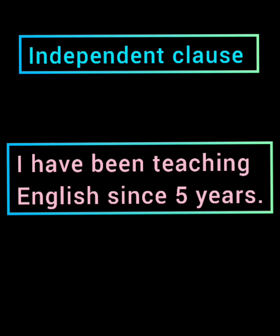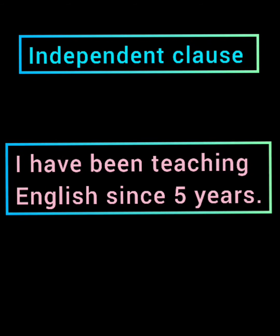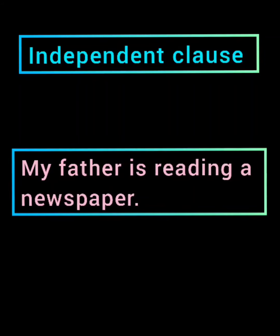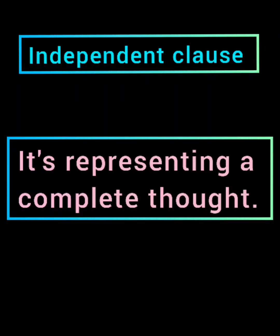Let's see the second sentence: 'My father is reading a newspaper.' Here also, whatever I wanted to convey, I have already conveyed through this sentence. So this is a complete sentence. It is not dependent on any other sentence to complete it. This means this is my independent sentence — it is complete in itself.